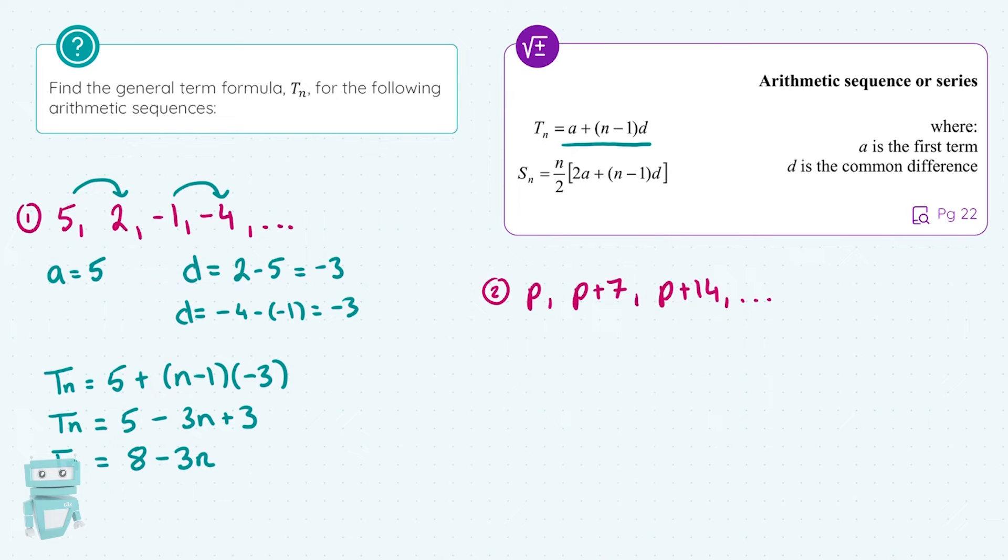So if I wanted to find out what the 10th term was, what I would do is I'd sub in N equals 10. If I wanted to find out what the fifth term was, I would sub in N equals 5, and so on.